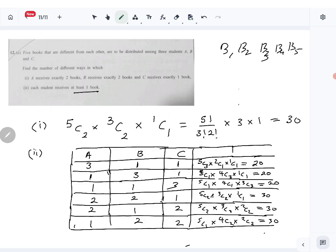So add them all together, you get 150. That is the answer for the second part: each student receives at least one book. We can do it in 150 ways. So that is question 12, part A. Next we look at 12 part B.